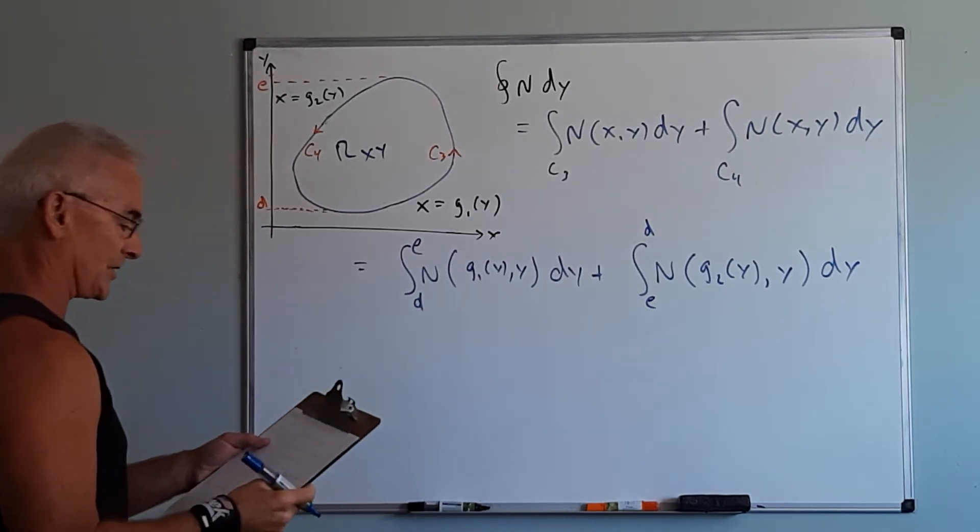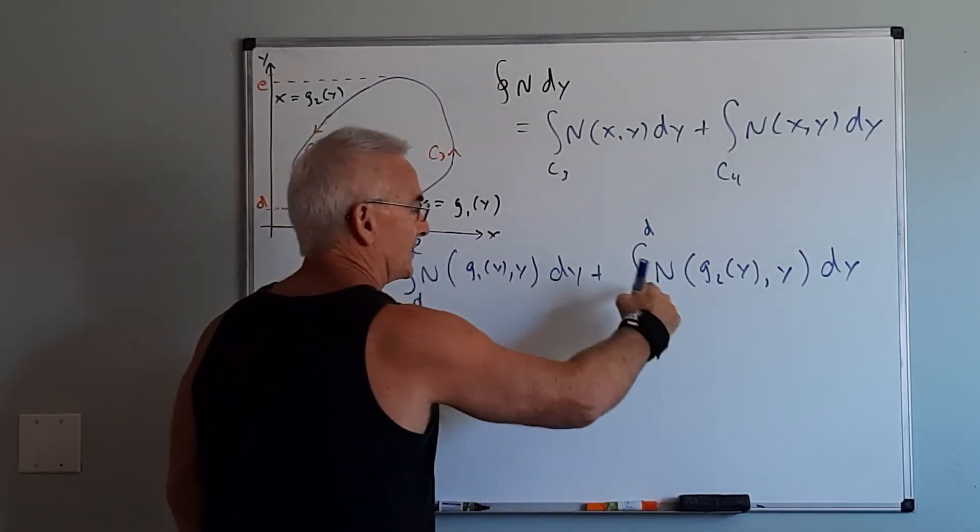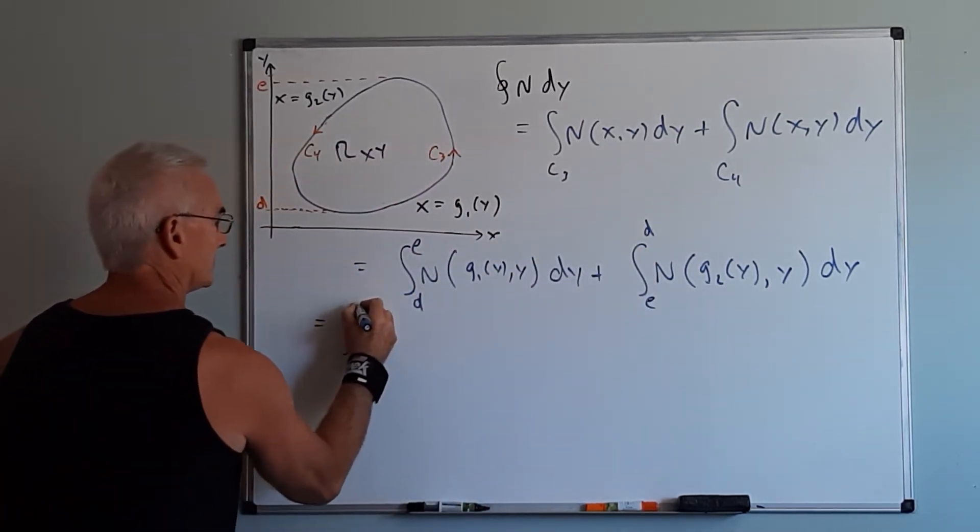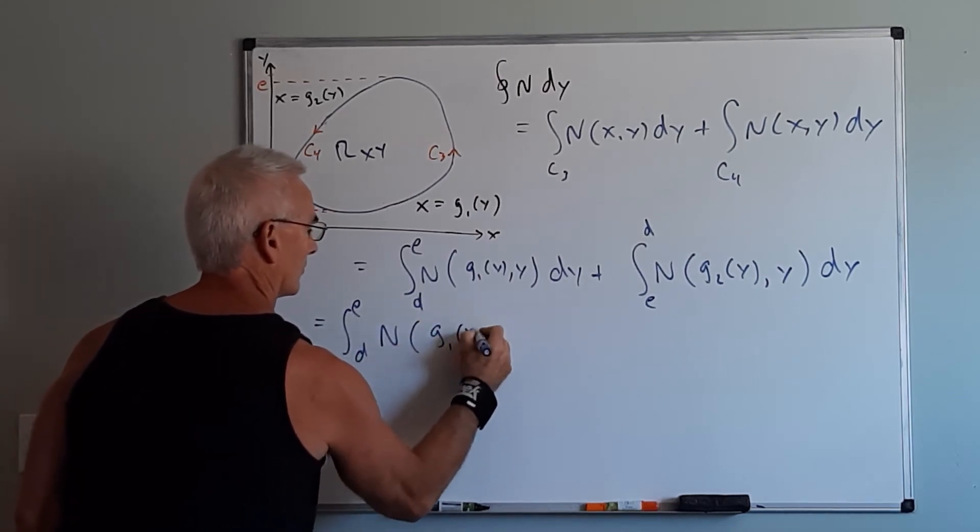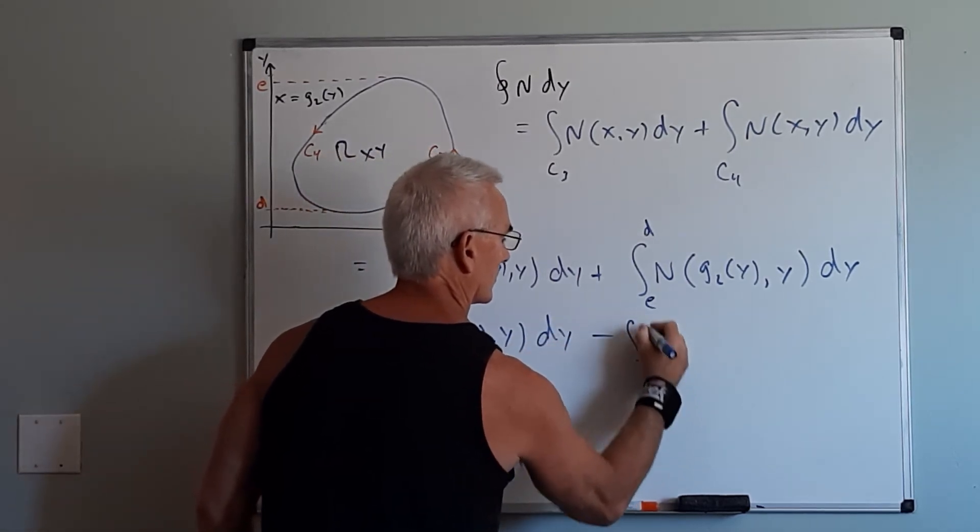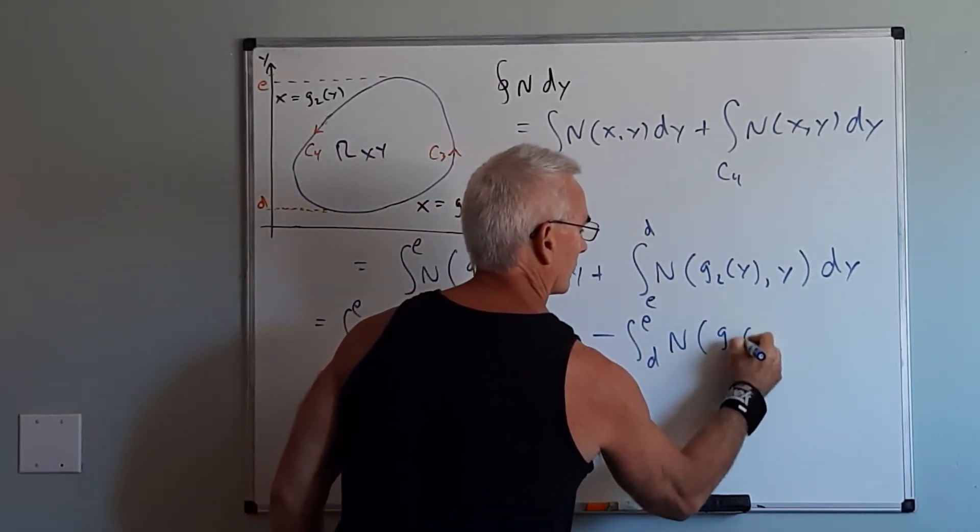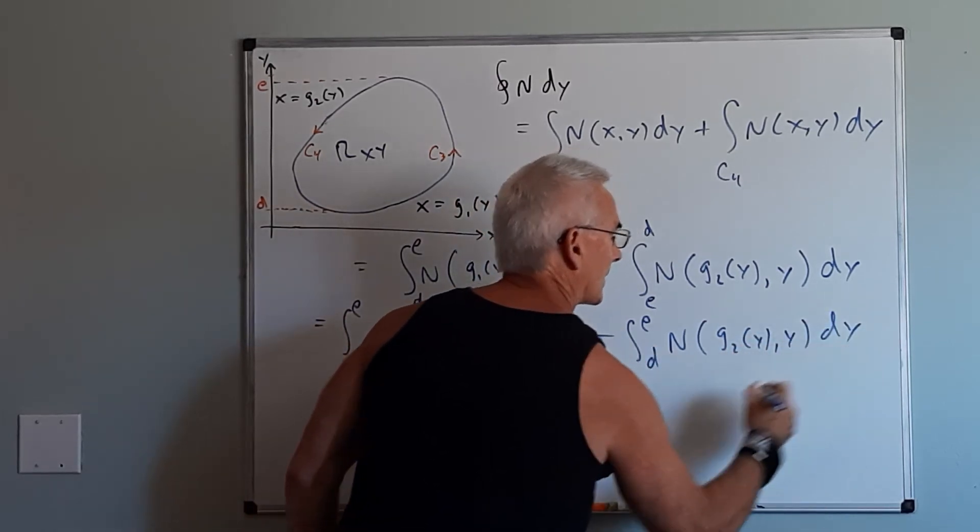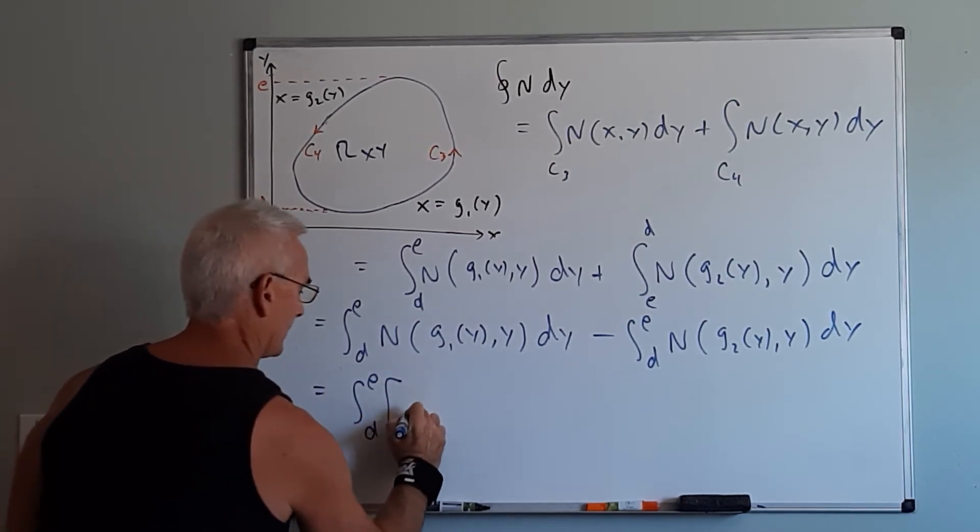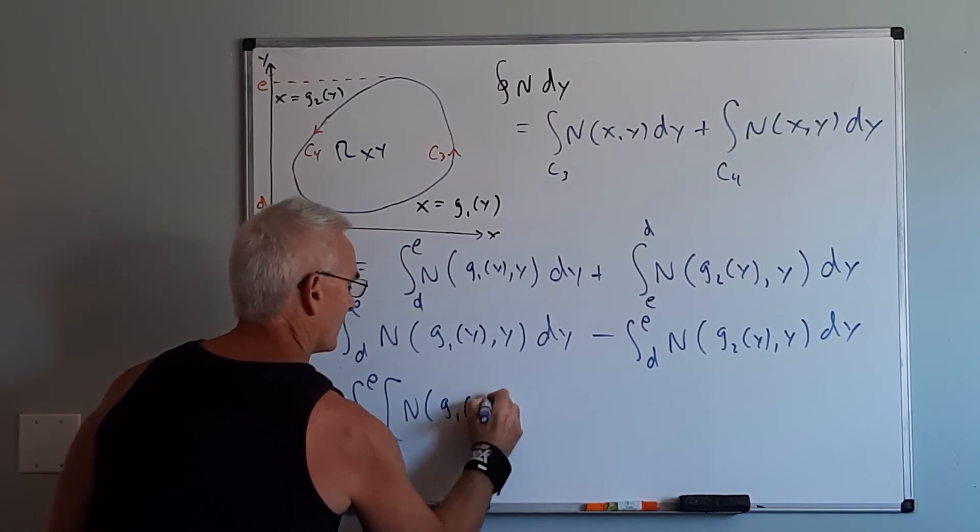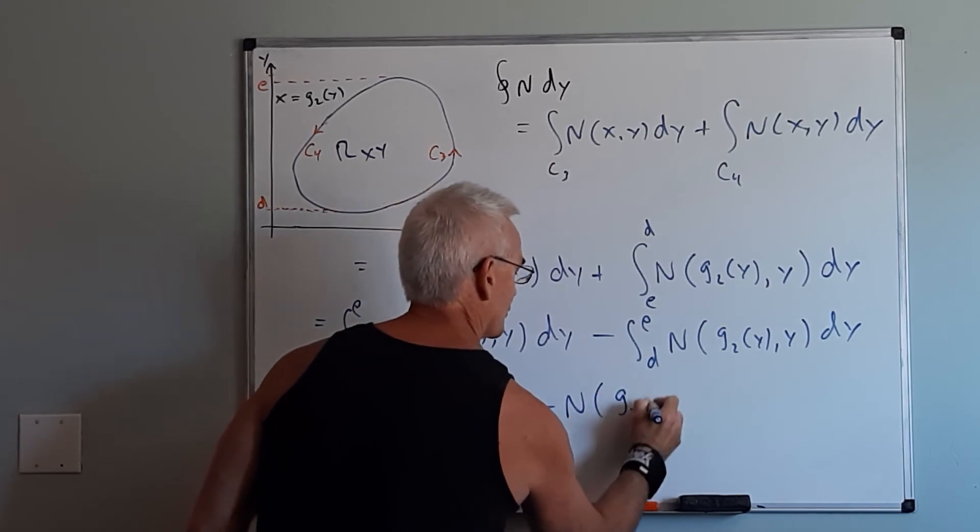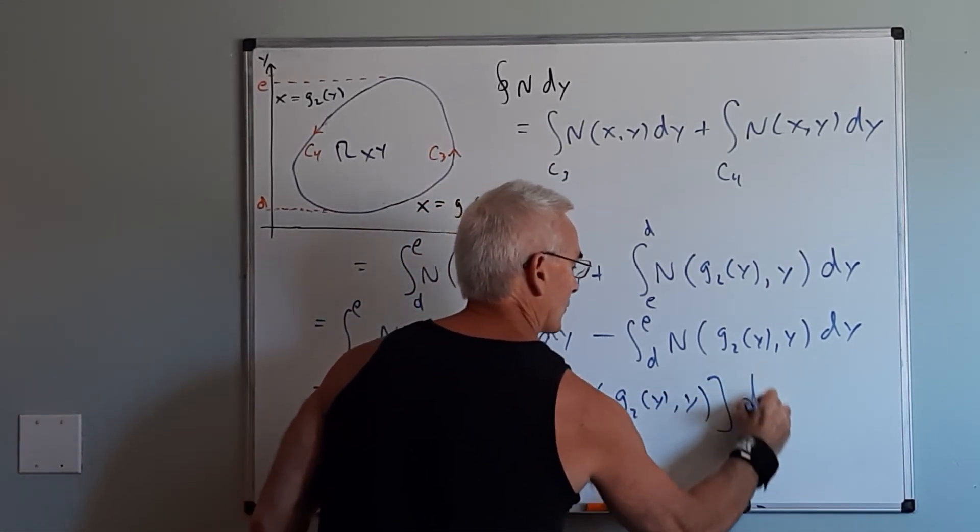So again very similar to what we just did a moment ago. I want to be able to add these so I have to reverse the order here of the integration. And then we can write this as one integral from d to e, n of g1 of y,y minus n of g2 of y,y all integrated with respect to y.